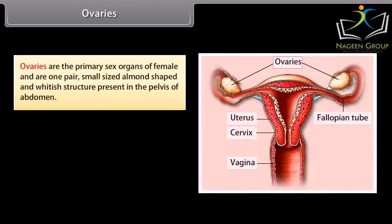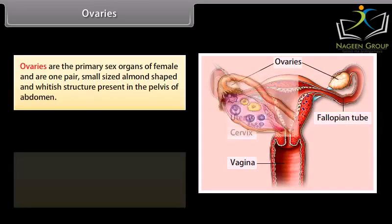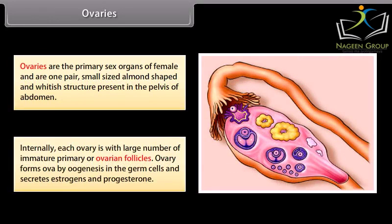Ovaries are the primary sex organs of females. They are one pair, small-sized, almond-shaped and whitish structures present in the pelvis of the abdomen. Internally, each ovary contains a large number of immature primary or ovarian follicles. The ovary forms ova by oogenesis in the germ cells, and secretes estrogens and progesterone.